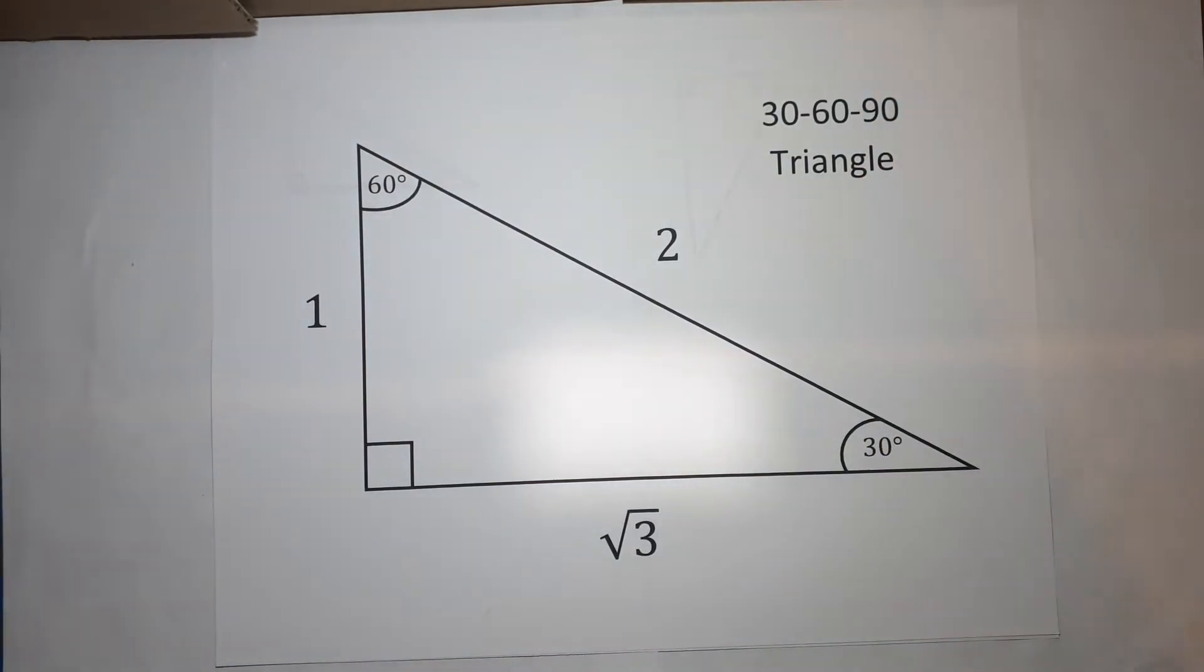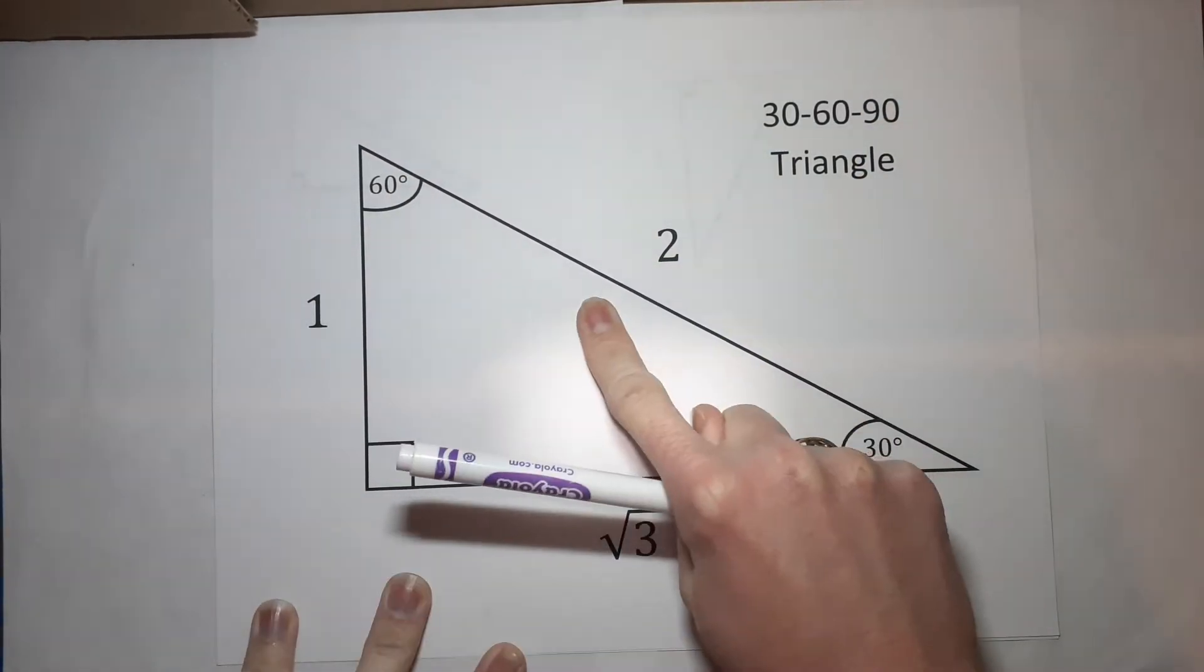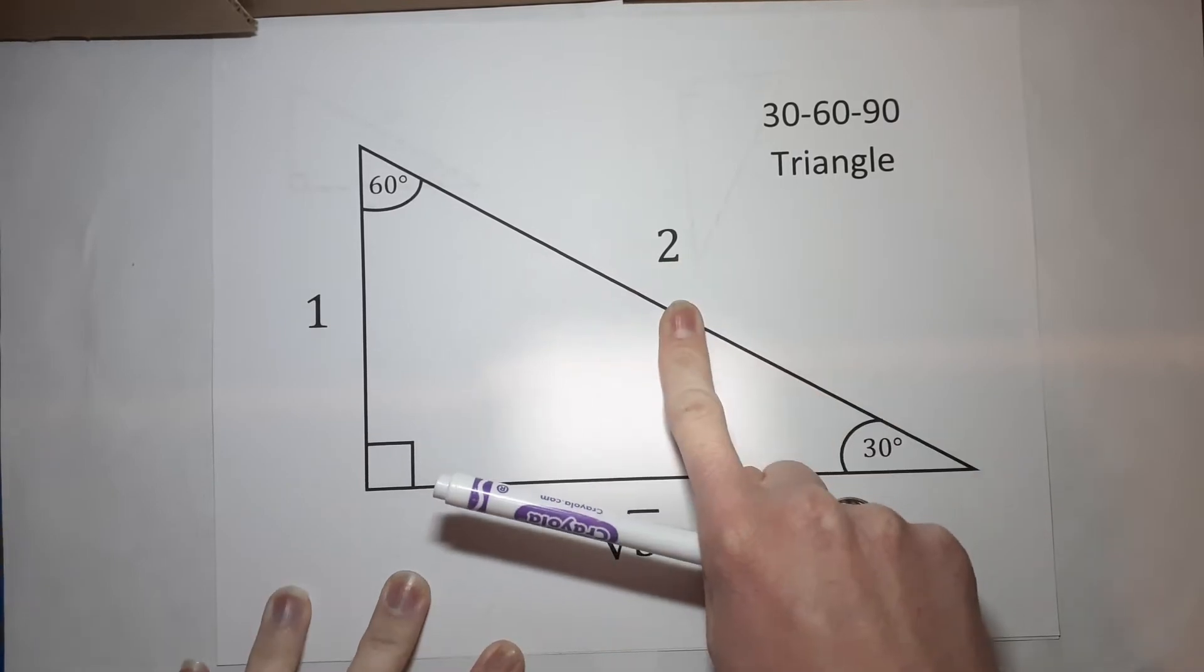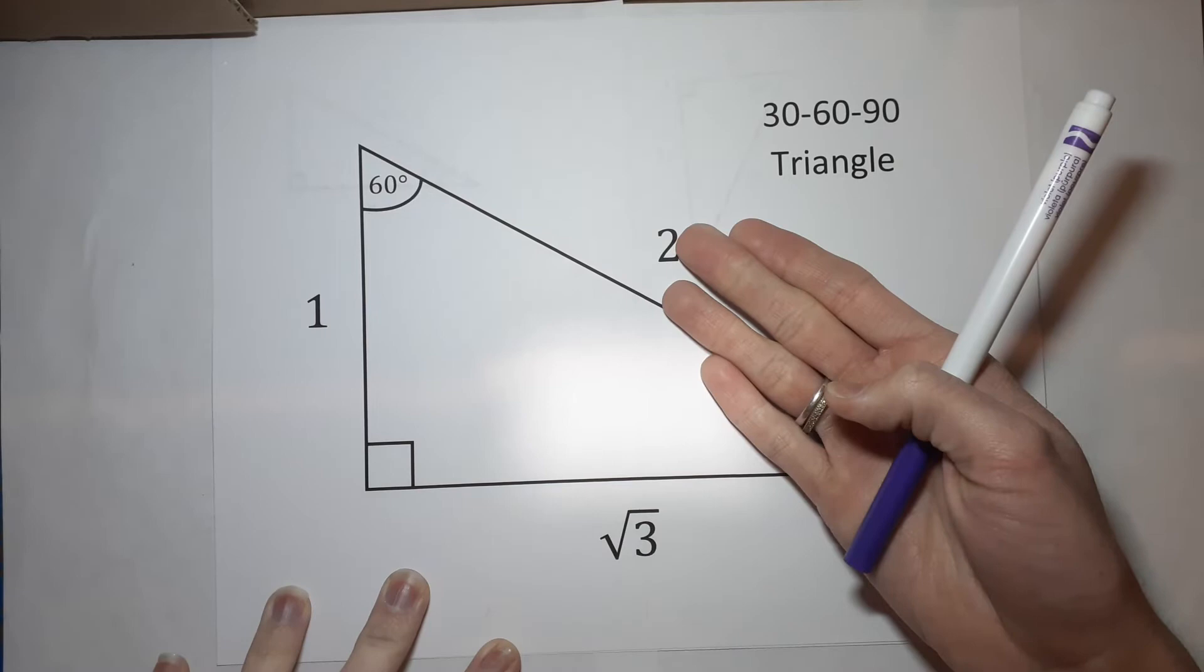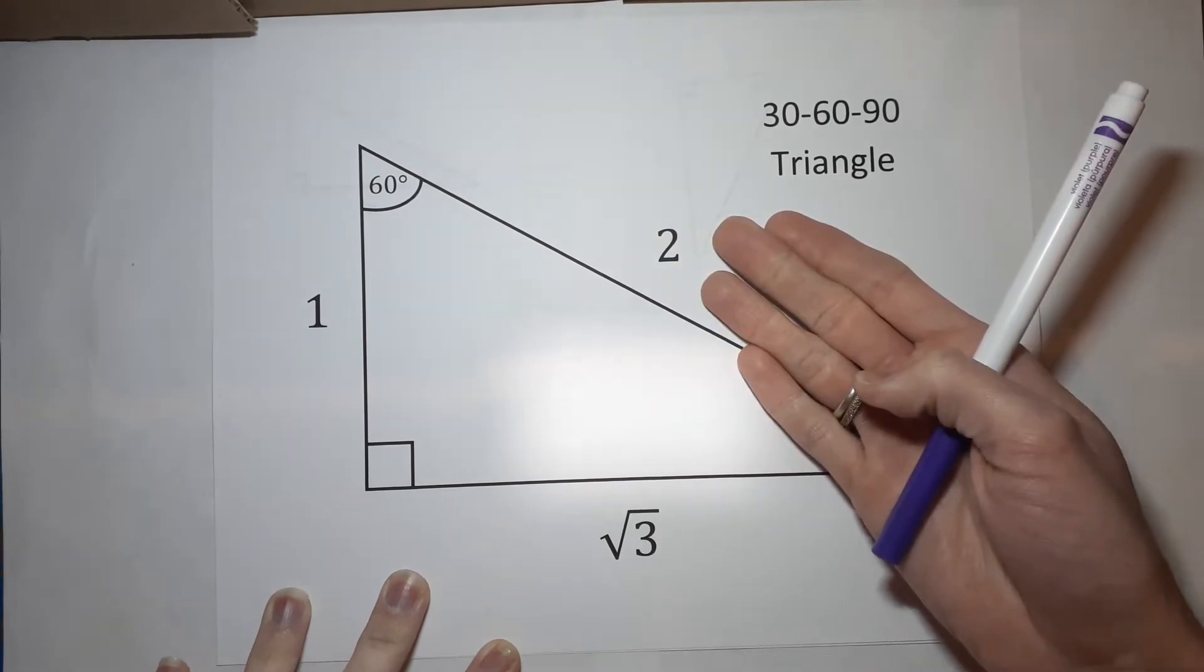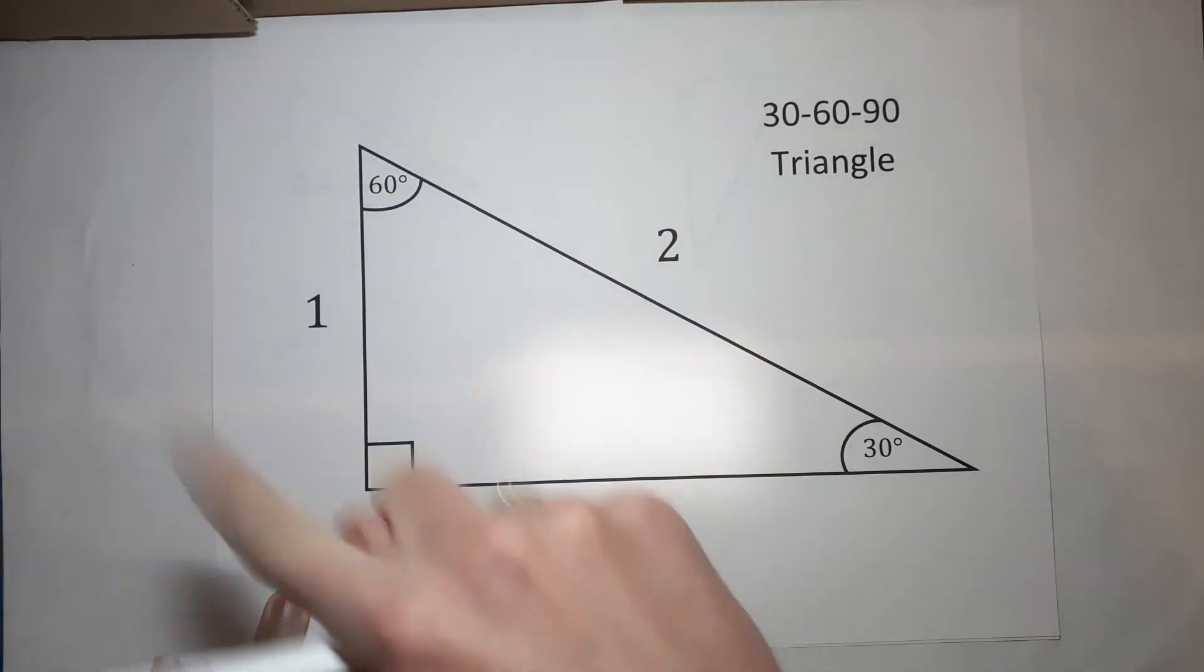When you have a 30, 60, 90 triangle or related to two. Sorry. Don't always just put that the answer is two because that won't be right. You'll see what I mean in just a minute.